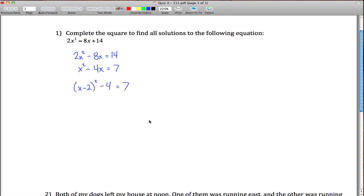From here, all we got to do is solve for x, so maybe add 4 to both sides. 4 plus 7 is 11. Take the square root of both sides. When you do that, make sure you add the plus or minus here for the square root of 11, then finally add 2 to both sides. So we get x equals 2 plus or minus root 11, and we have our answer.